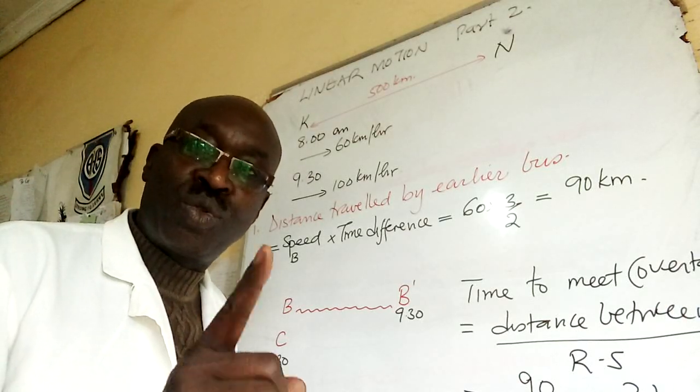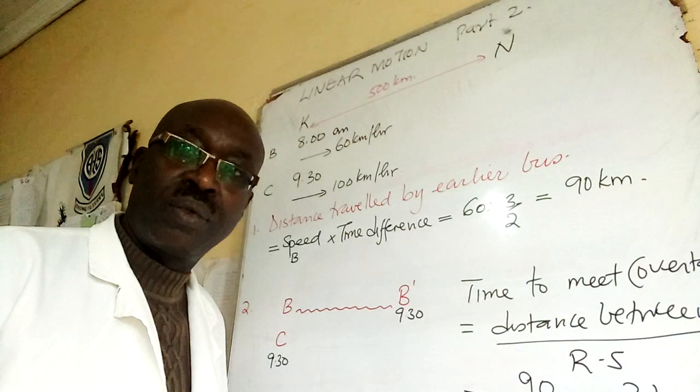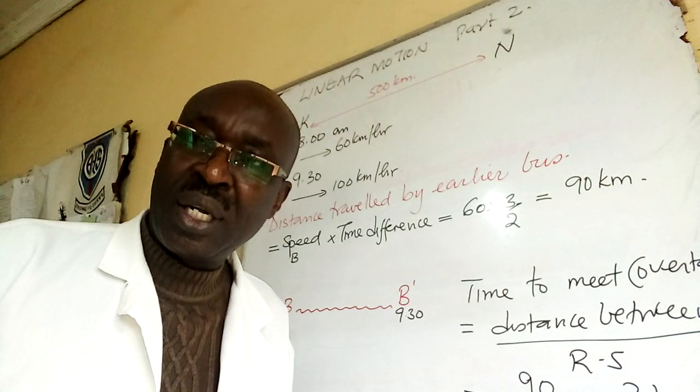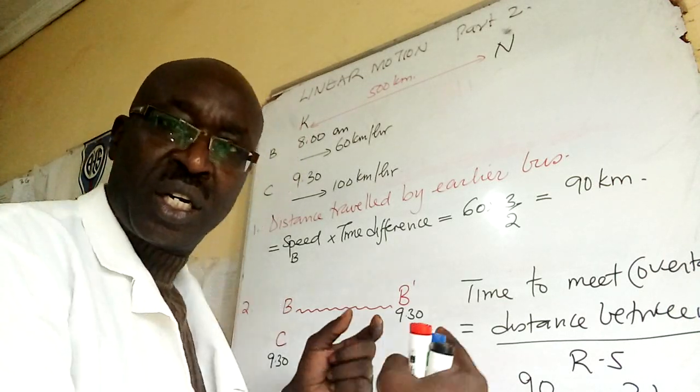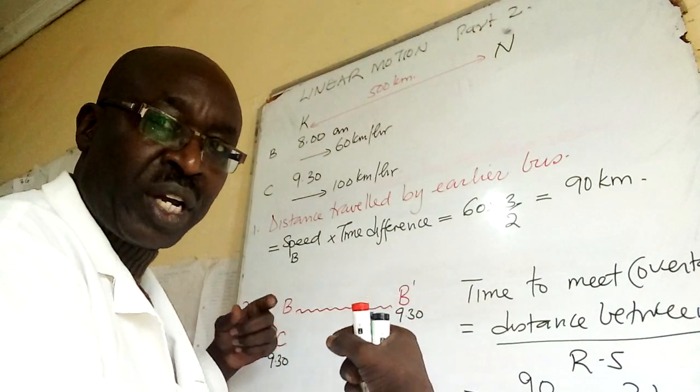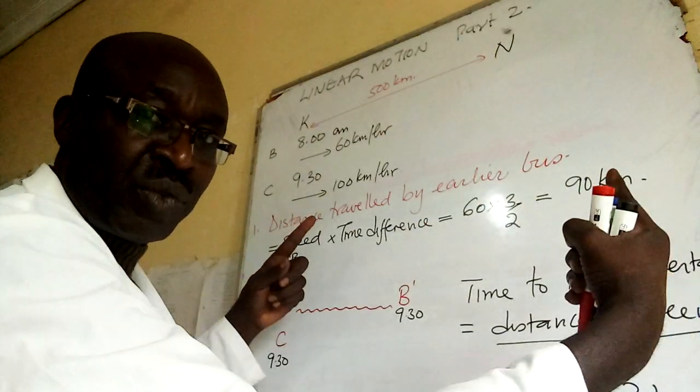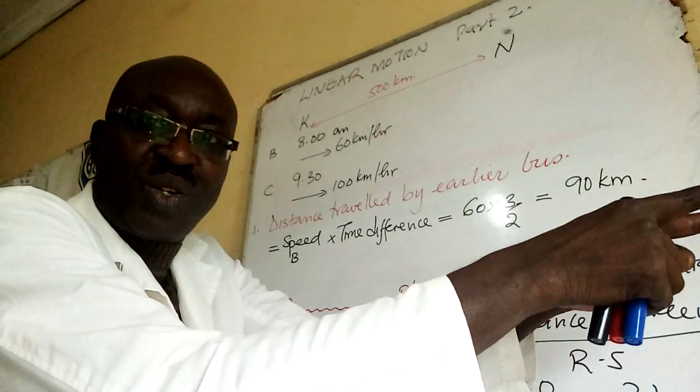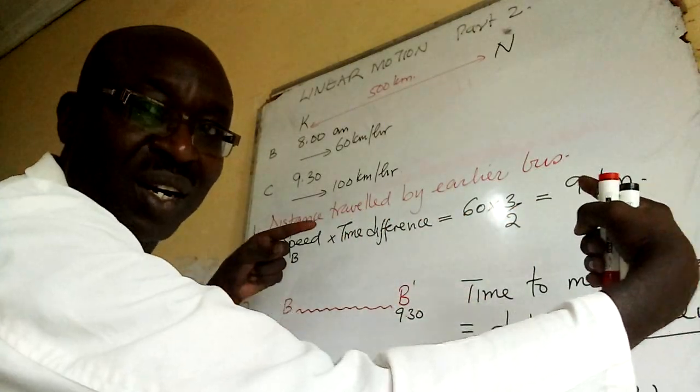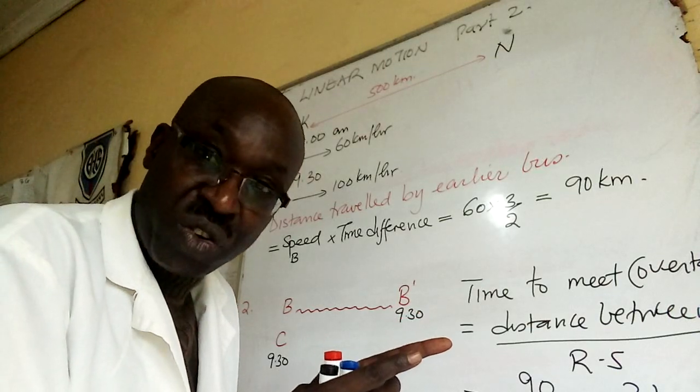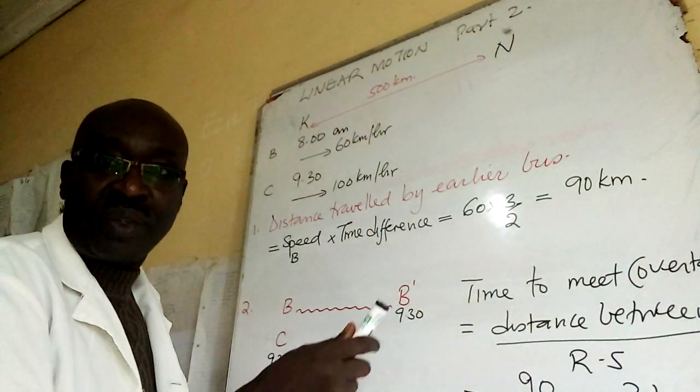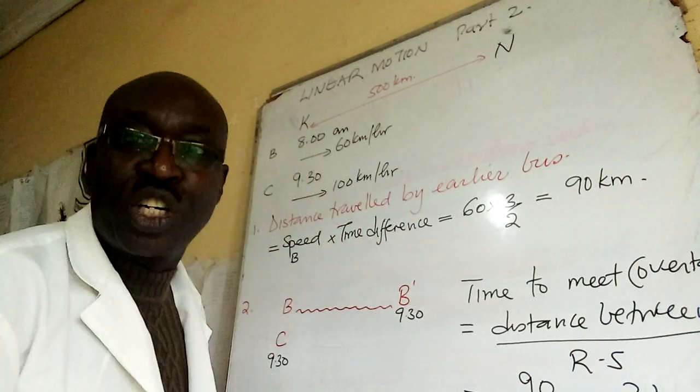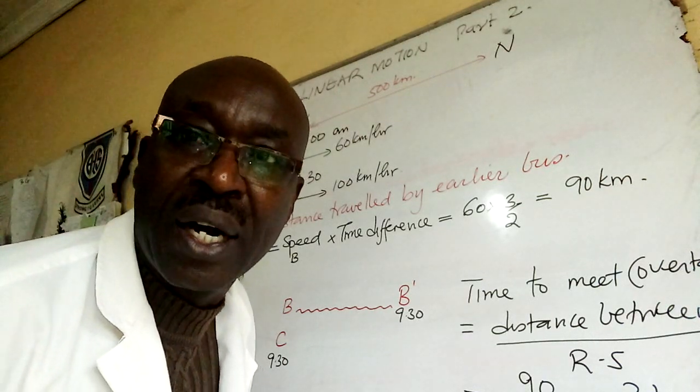So welcome to linear motion part two. Part one I handled vehicles moving in opposite direction - one this side, one the other side, moving towards each other. This time they are moving in the same direction. First one opposite, now same direction. So I get an example. This is K for Kisumu, Kakamega, Kitui.